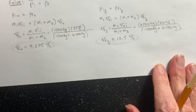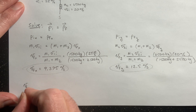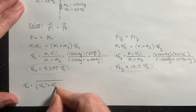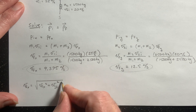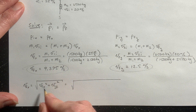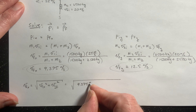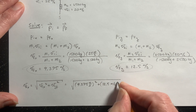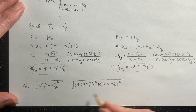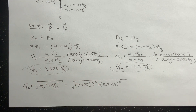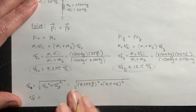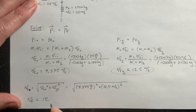Now I have the x and y components of the final velocity. Using the Pythagorean theorem to find the magnitude: |Vf| = √(Vfx² + Vfy²) = √(9.375² + 12.5²). When you plug that into your calculator and round to three significant figures, the magnitude of the final velocity is 15.6 meters per second.